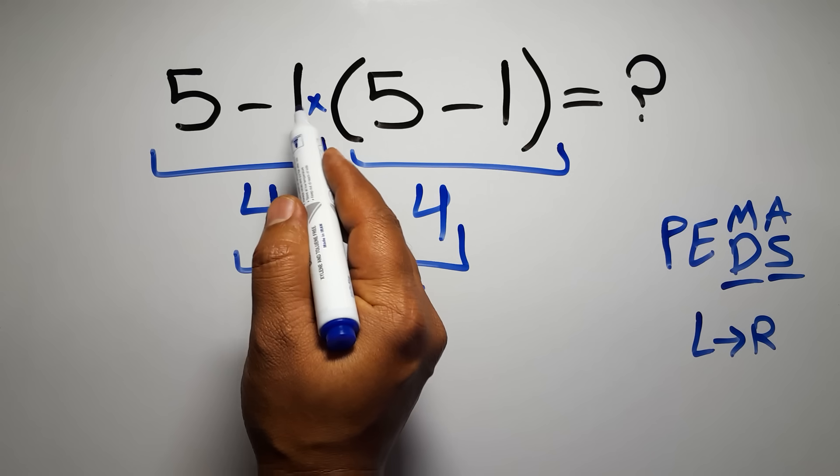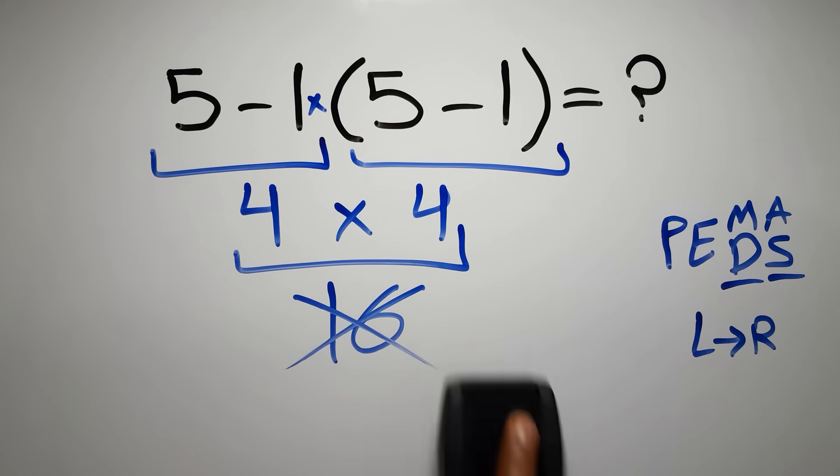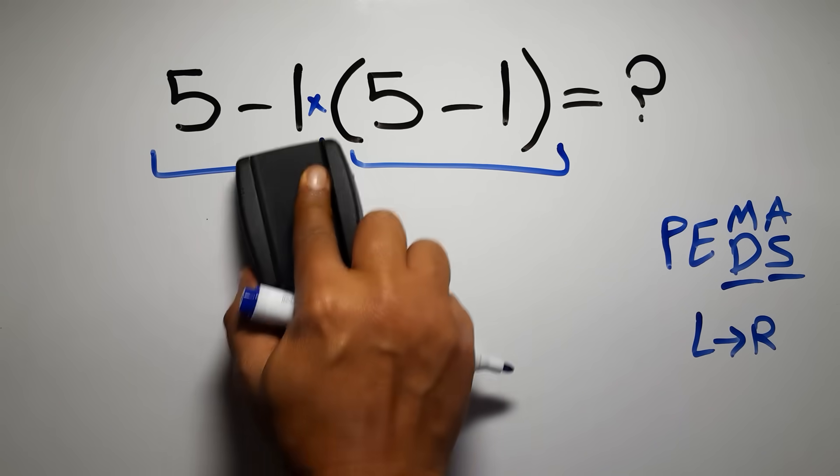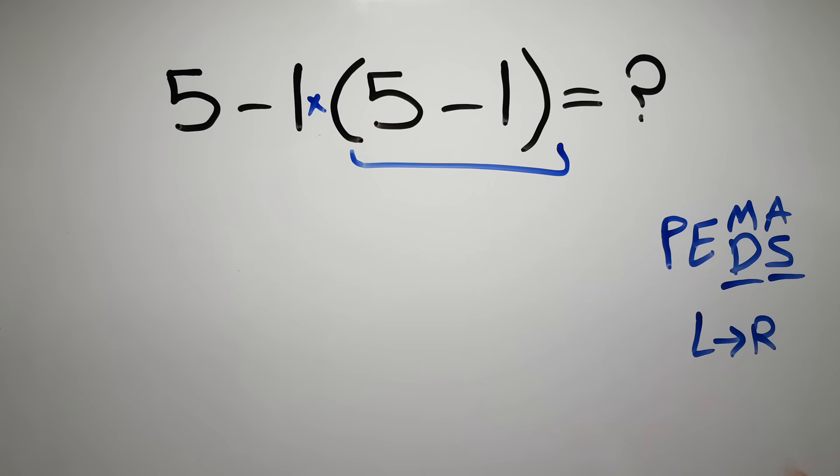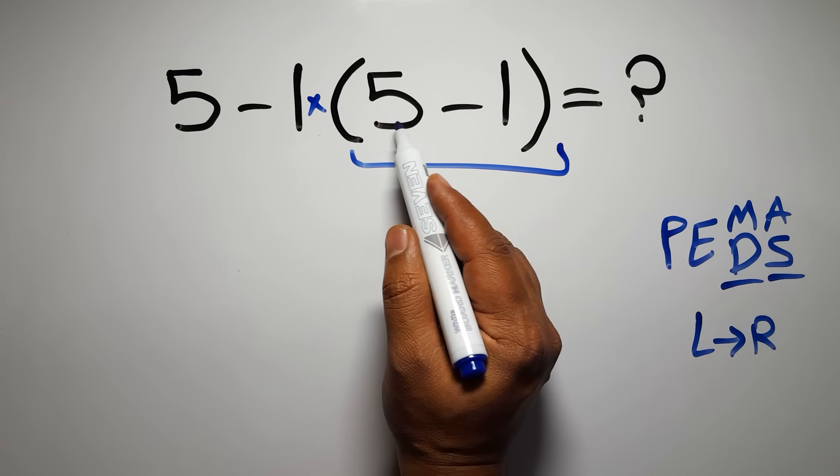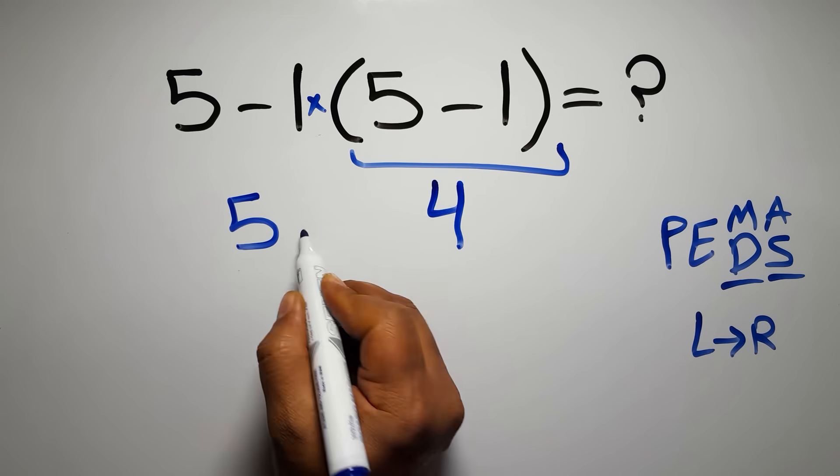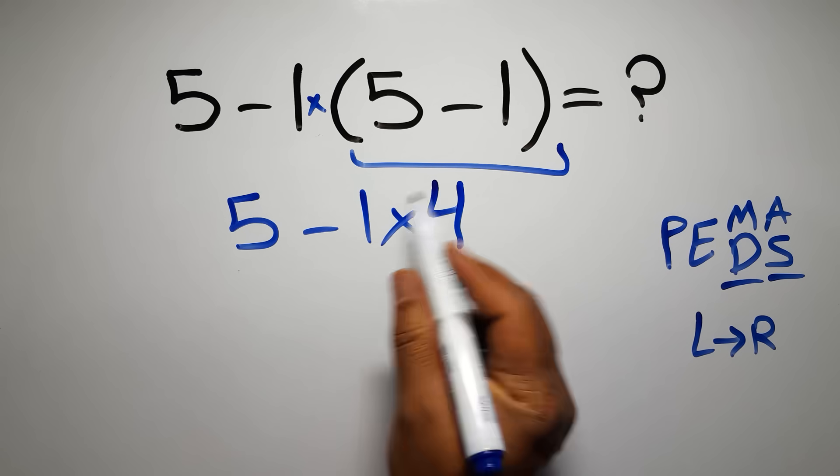If we do this subtraction before this multiplication or these parentheses, it is wrong. So first these parentheses. Inside these parentheses we have 5 minus 1, which equals 4. So we have 5 minus 1 times 4.